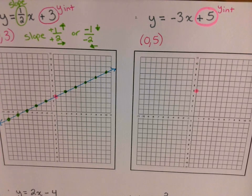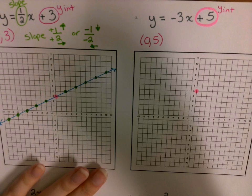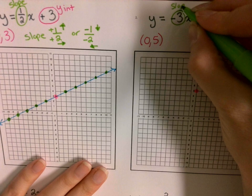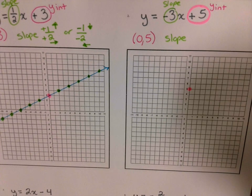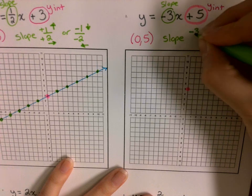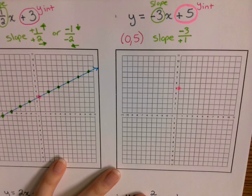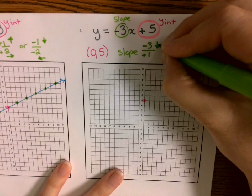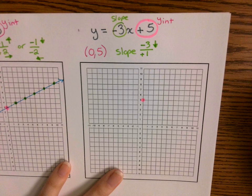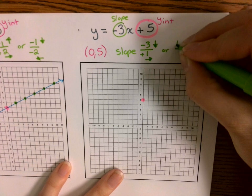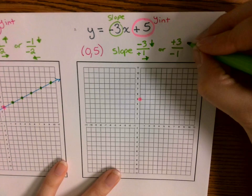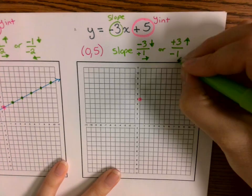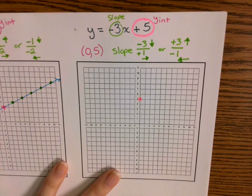This time, my slope happens to be negative. When I have a negative slope, one of the values is negative while the other is positive. I could write it as negative three over positive one — meaning I go down three and then right one. Or I could reverse it: positive three over negative one, which means I go up three but to the left one. Both will take me along the line of the graph.